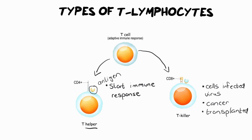Killer T cells also destroy cancer cells, and they can also destroy transplanted organs. That's probably why you see people who have an organ transplant reject the organ — their own immune system is attacking it. The killer T will know something is suspicious because it has receptors on the outside that indicate whether the antigen on what it's encountering matches its receptor, and vice versa. If that's not the case, it knows it's a foreign invader.